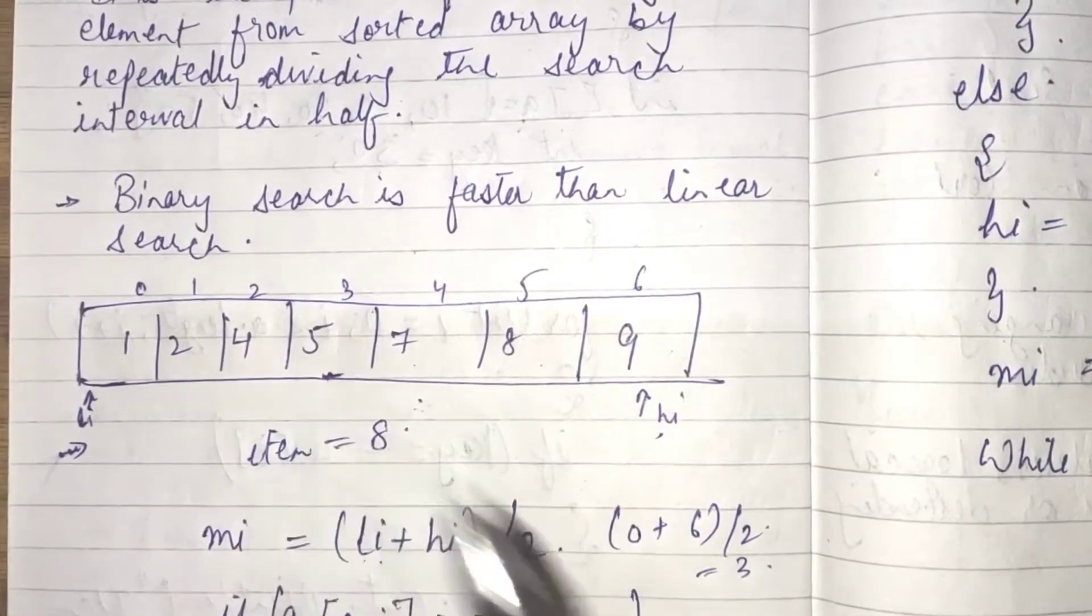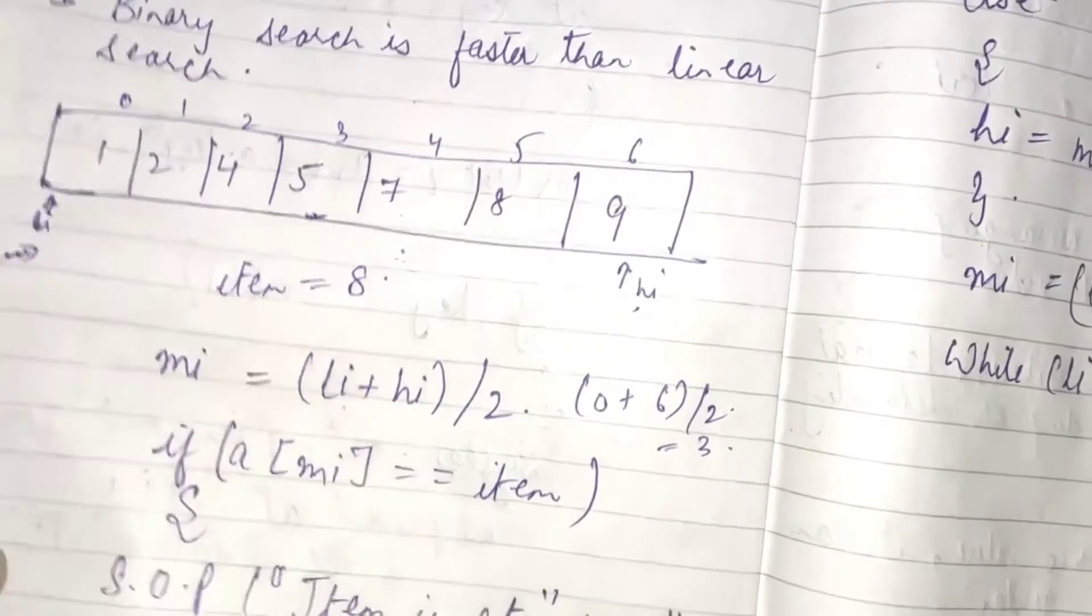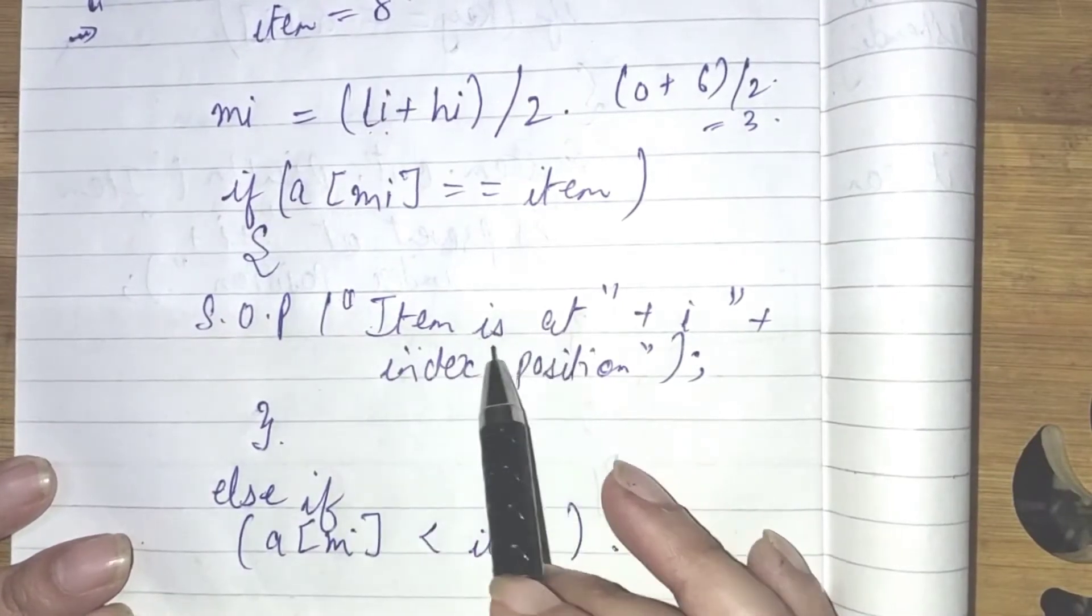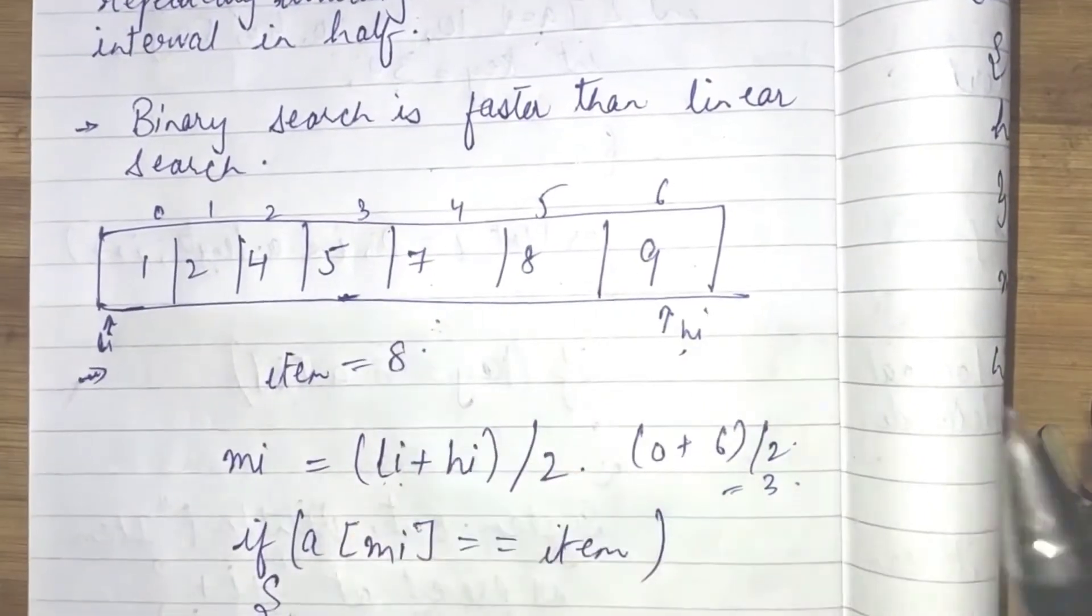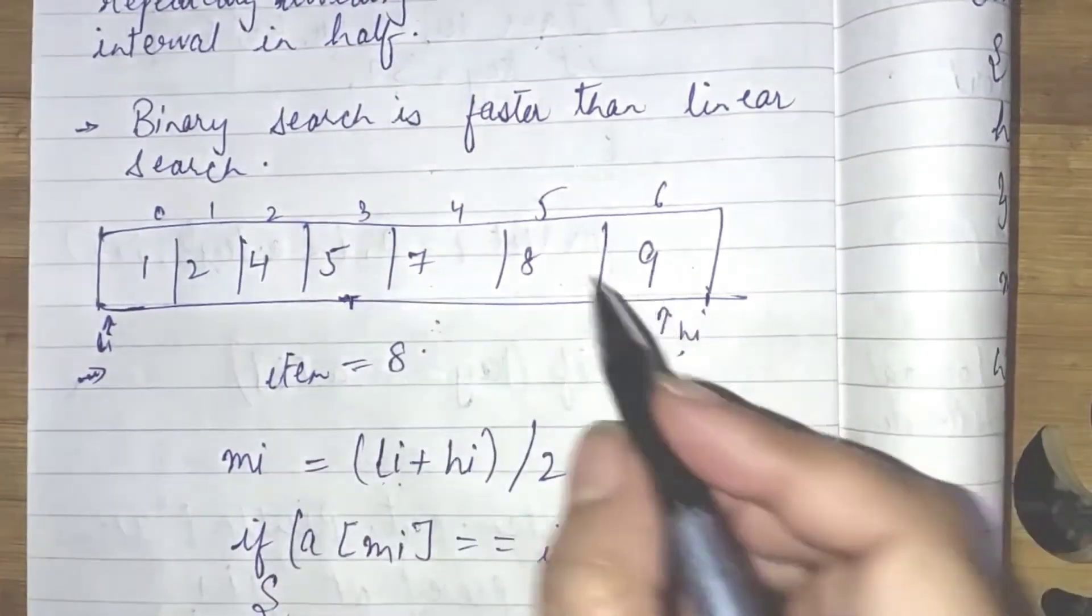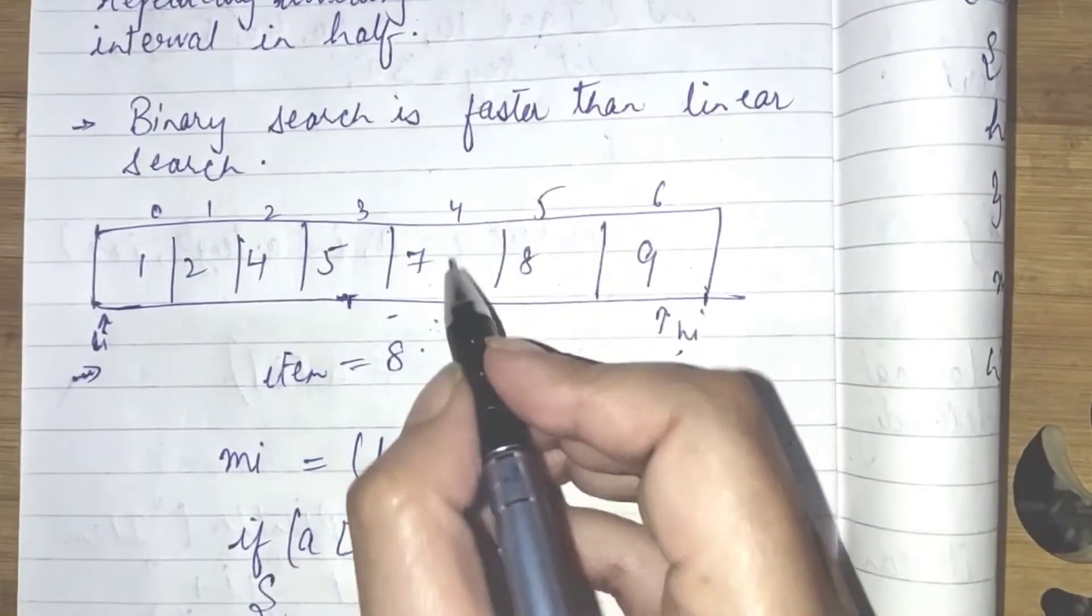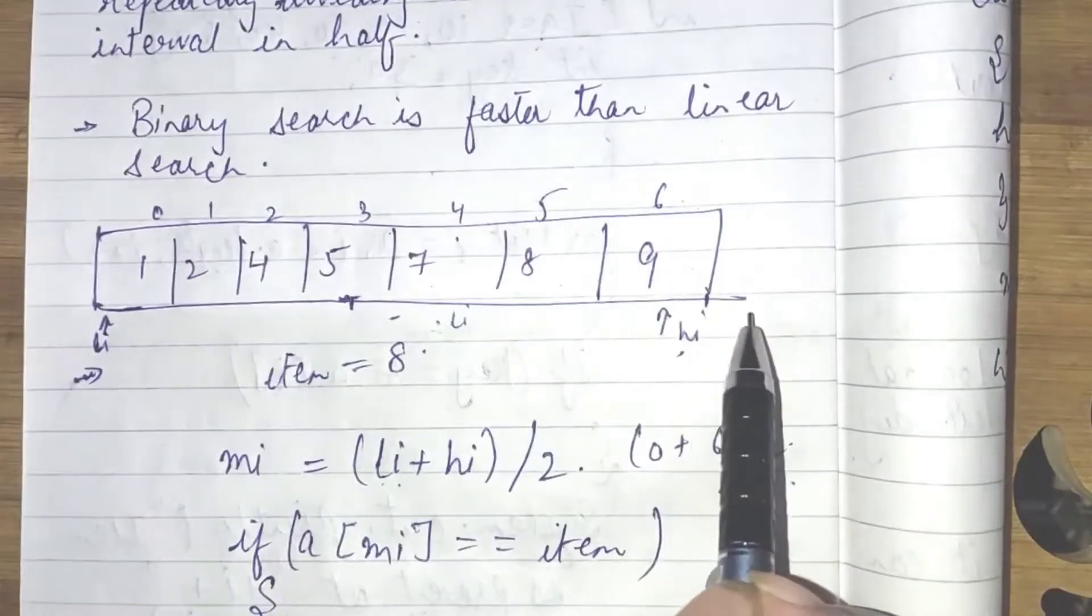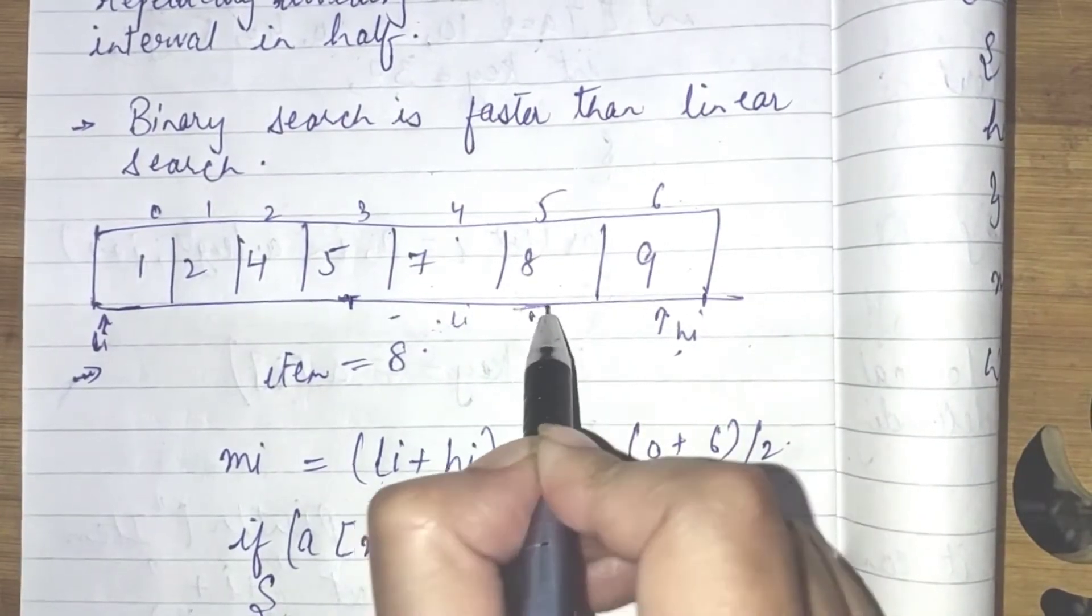Here, 5 is our middle item. If 5 is the item which you want to search, in that case, it will print system.out.print item is at this location and that is your index position. But, if the value is greater than it, in that case, the value is going to be searched from this list to that list. And, here it will be MI minus 1. So, the value in that case, our lowest item is going to become 4 and the highest item is going to become 6. Again, we will divide it by 2 and we will find the middle value. Here now, the middle value will be 5 and we will get the output.